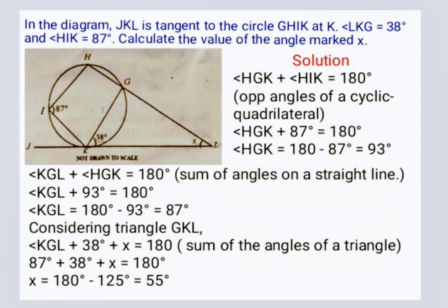In the diagram, JKL is a tangent to the circle GHIK at K. Angle LKG is equal to 38 degrees and angle HIK is equal to 87 degrees. Calculate the value of the angle marked x. Solution: